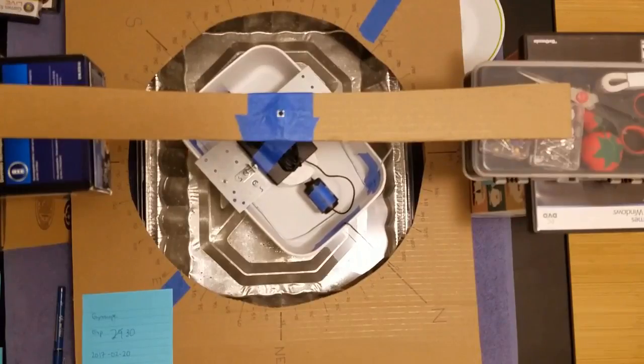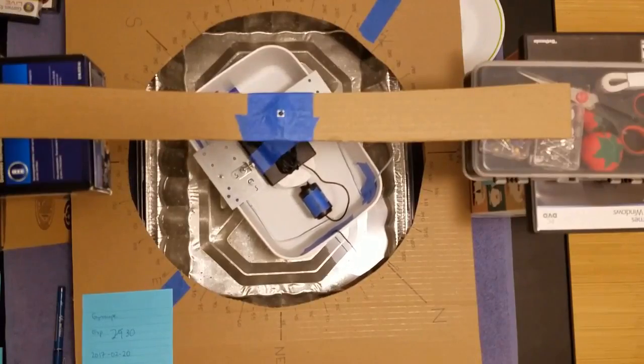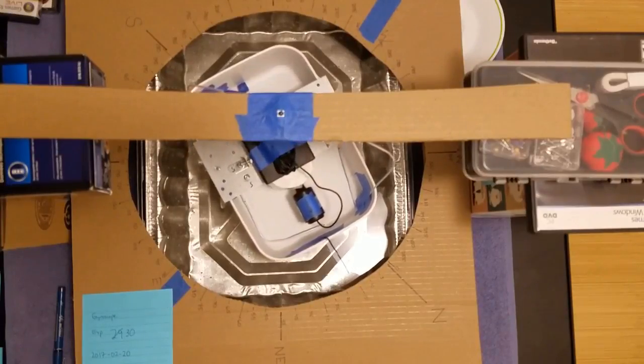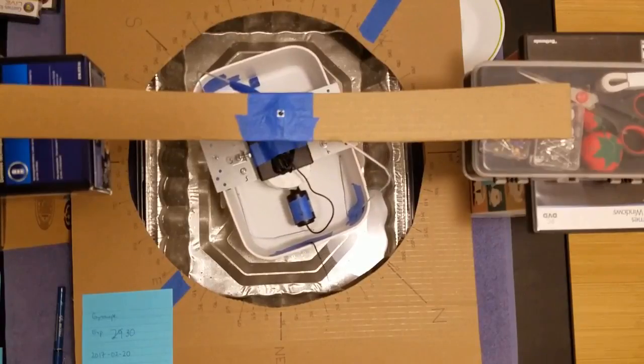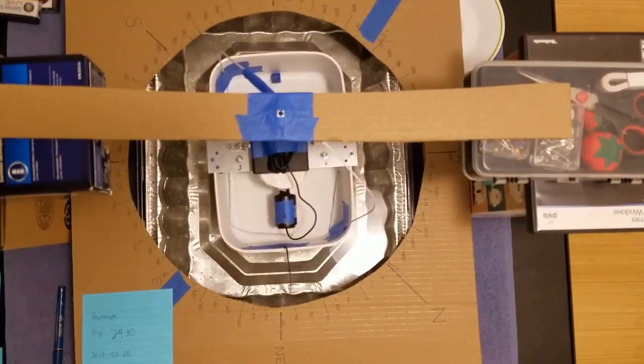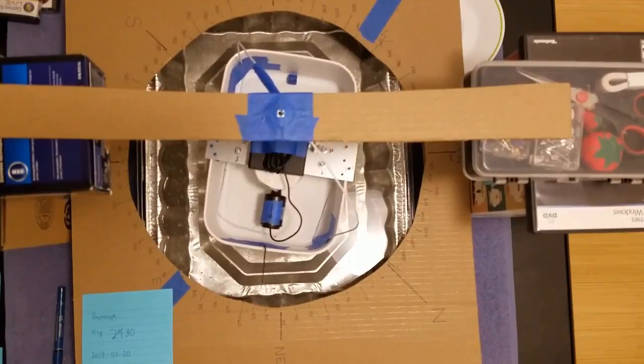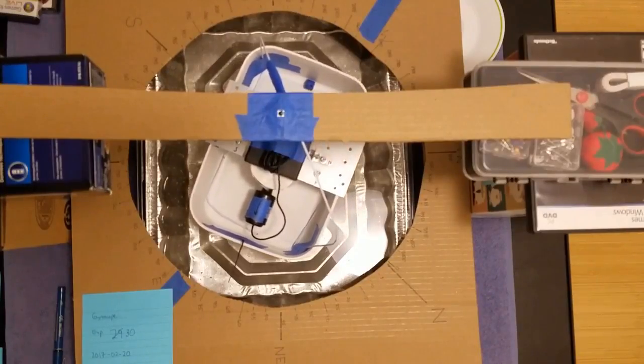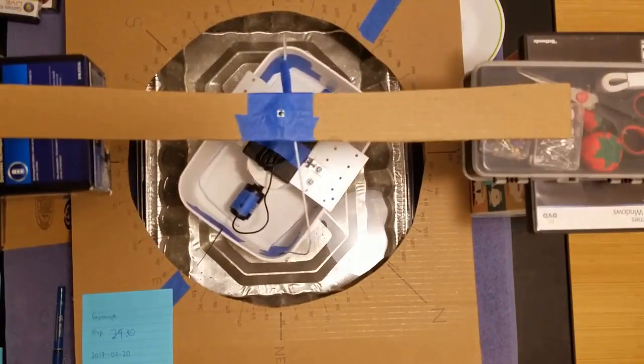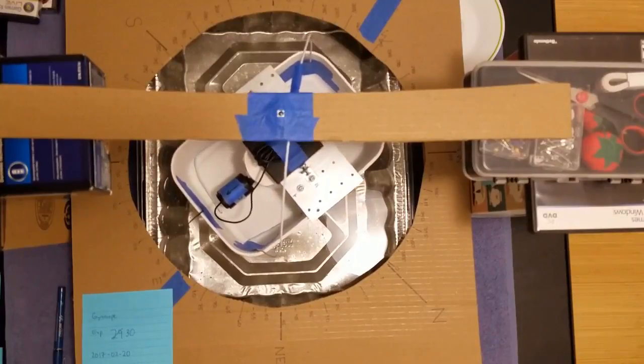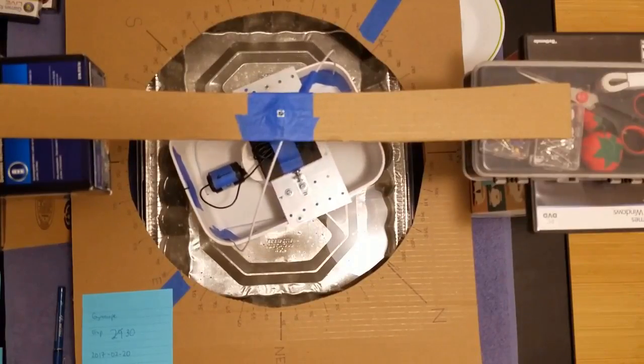And just like when I started it up, as the motor spins down, the boat spins as well due to conservation of angular momentum. Essentially it's transferring its momentum to the boat through the friction in the bearings.